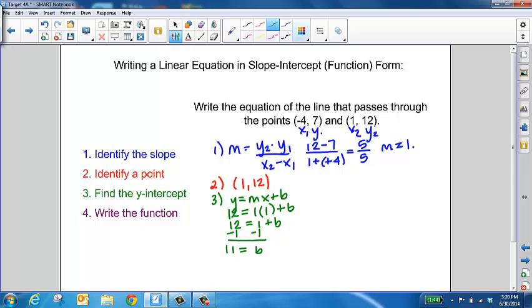So then your final step is to actually write your equation. You're going to use the slope that you found in part 1 and the y-intercept that you found in part 3. So your equation is going to become y equals 1x plus 11.